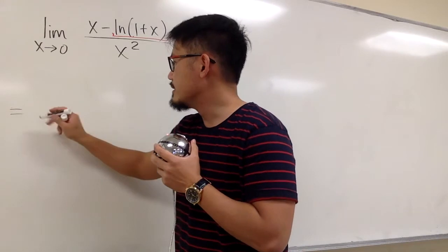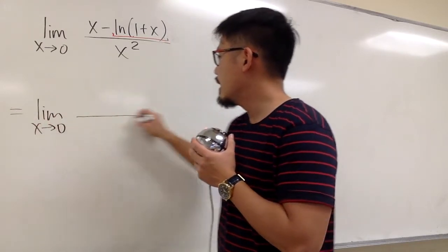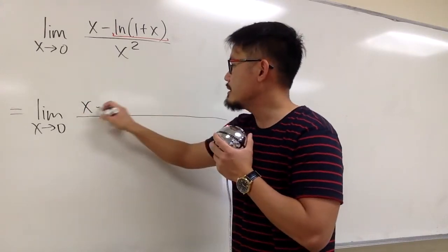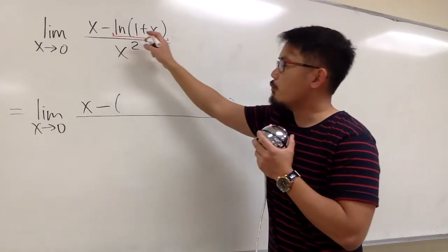So here, this is the limit as x goes to 0, and on the top we have x staying the same, then we put down the minus, and then we open the parentheses.